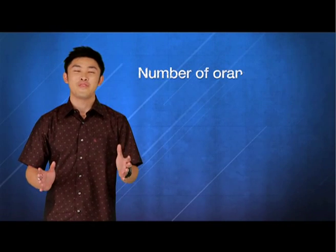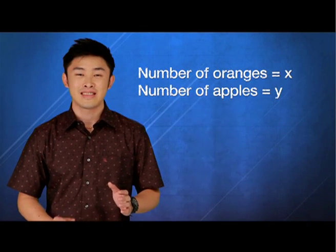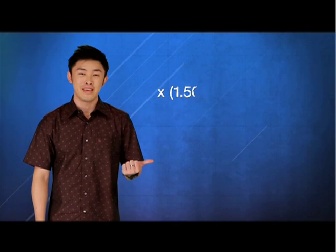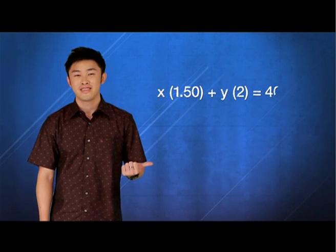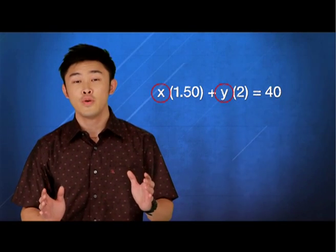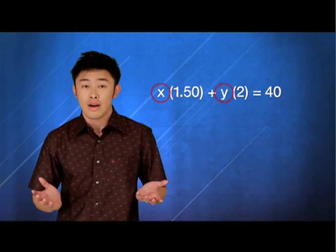Now, let's say we have X number of oranges and Y number of apples. It can then be represented as X times 1.50 plus Y times 2 equals 40. Now, notice that we have two unknowns in one equation. Therefore, we are unable to conclude either the value of X or Y.